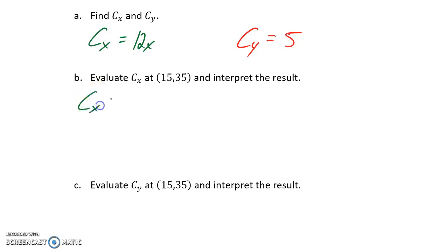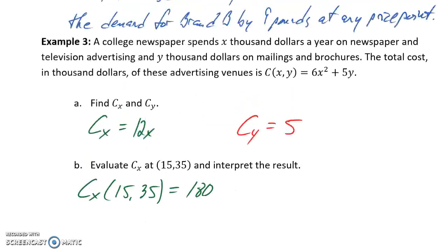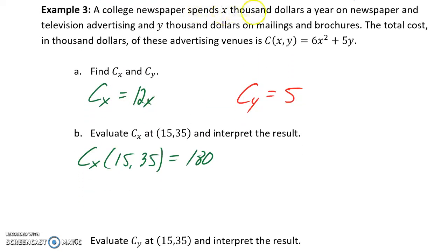We can evaluate the partial derivative with respect to X at X equals 15, Y equals 35, and that result would be 180. Since we're told at the beginning that our value for X is in thousands of dollars, that result of 180 translates into $180,000 in the context of the problem.